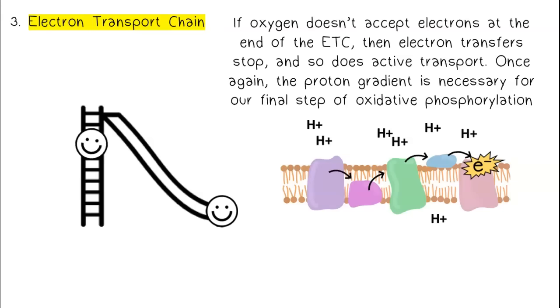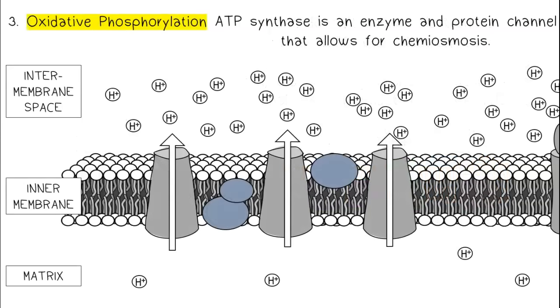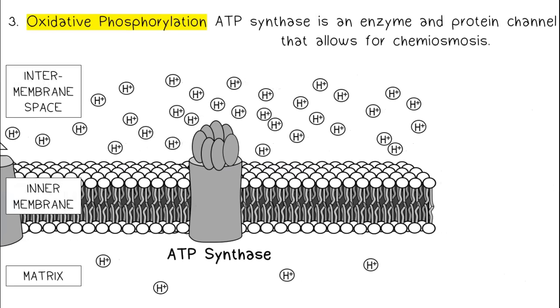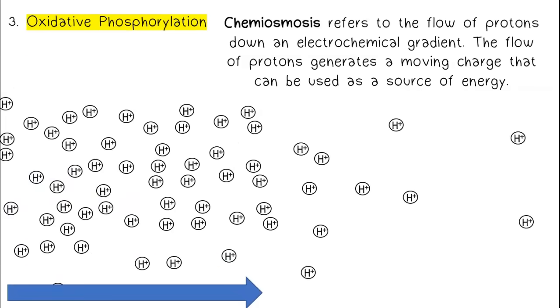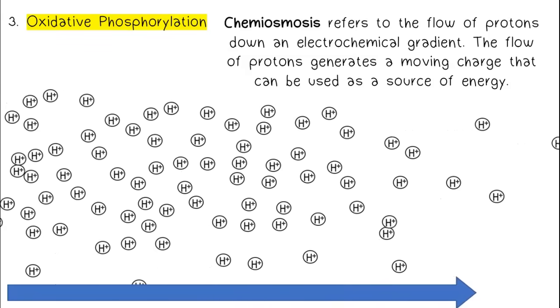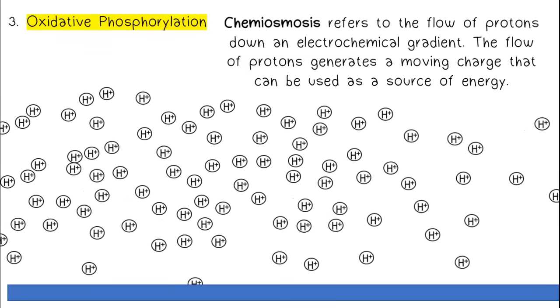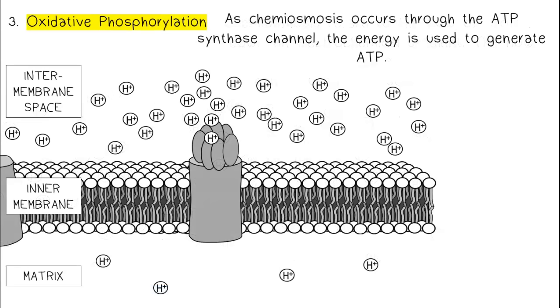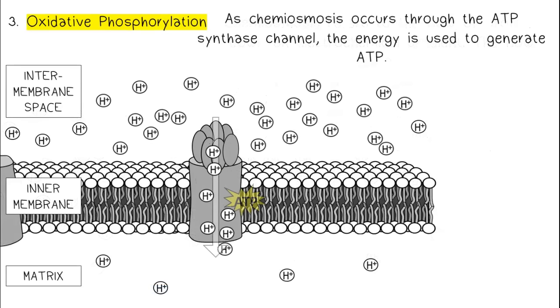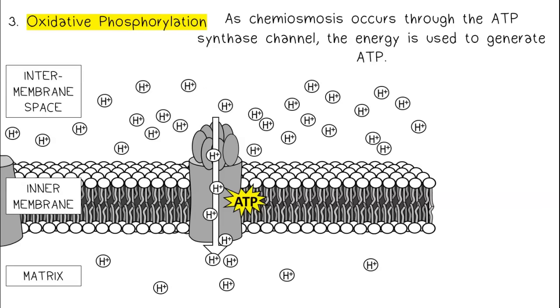And once again, the proton gradient is necessary for our final step of oxidative phosphorylation. ATP synthase is an enzyme and protein channel that allows for chemiosmosis. Chemiosmosis refers to the flow of protons down an electrochemical gradient. The flow of protons generates a moving charge that can be used as a source of energy. As chemiosmosis occurs through the ATP synthase channel, the energy is used to generate ATP.